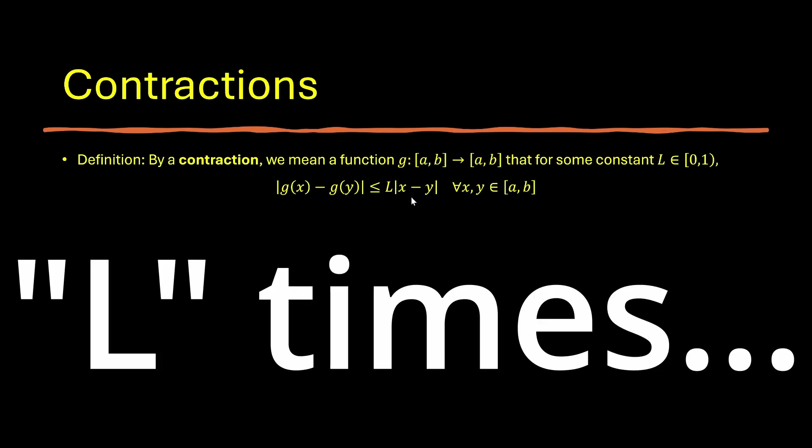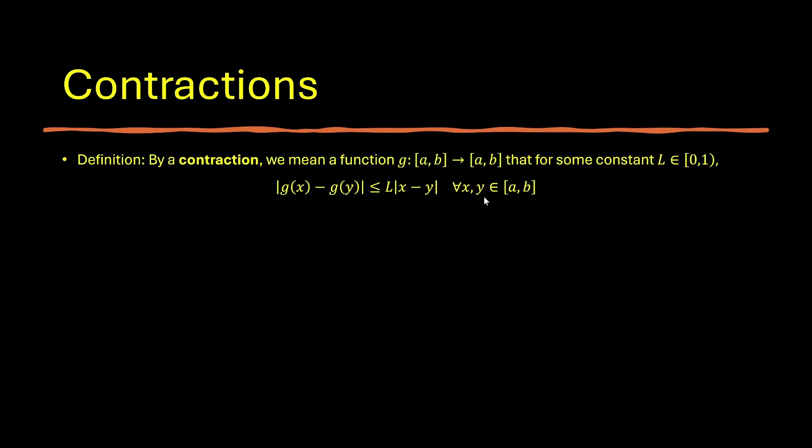Now let's define the notion of contractions. Definition. By a contraction, we mean a function g from closed interval a to b to itself. That for some constant L, which is greater or equal to zero and strictly less than one, that the absolute value of g of x minus g of y is less than or equal to L times the absolute value of x minus y. And this is true for all x, y in the interval a to b. So the idea of the contraction is that the size of the rise, which is the left-hand side of the inequality, is less than or equal to the size of the run times some shrinkage factor.